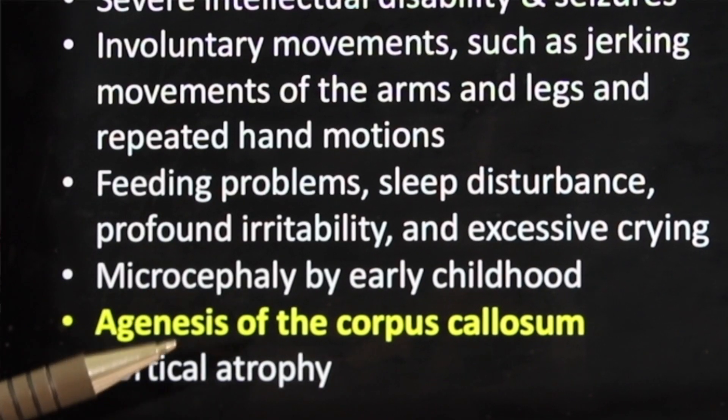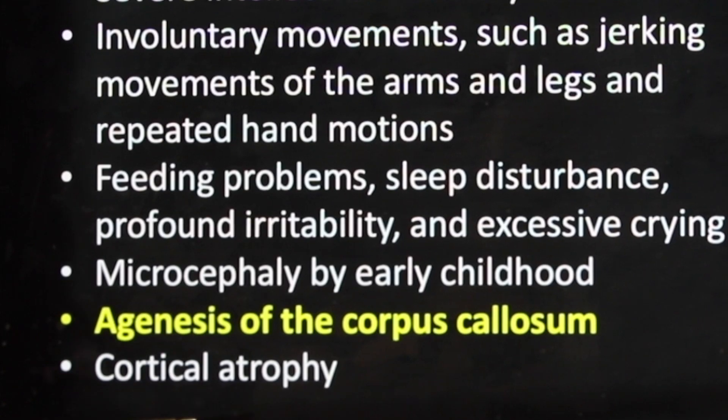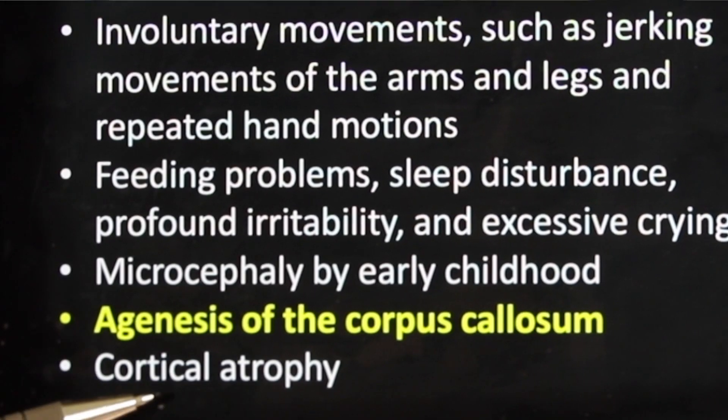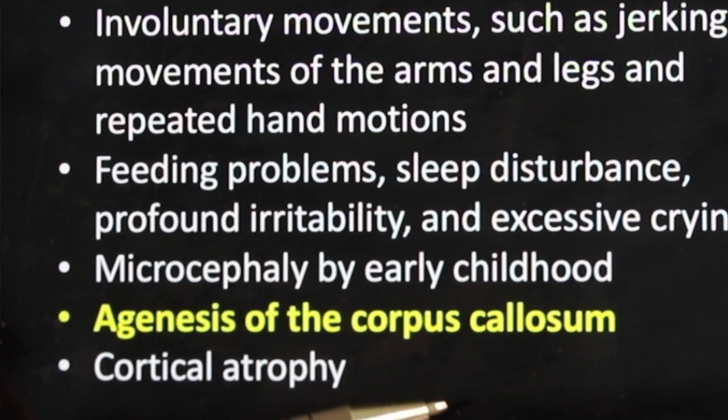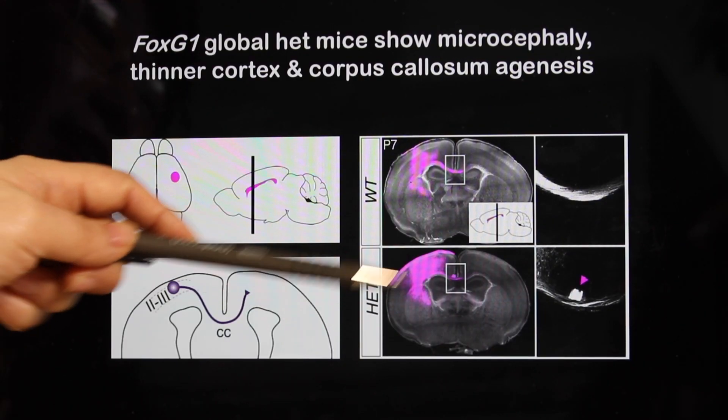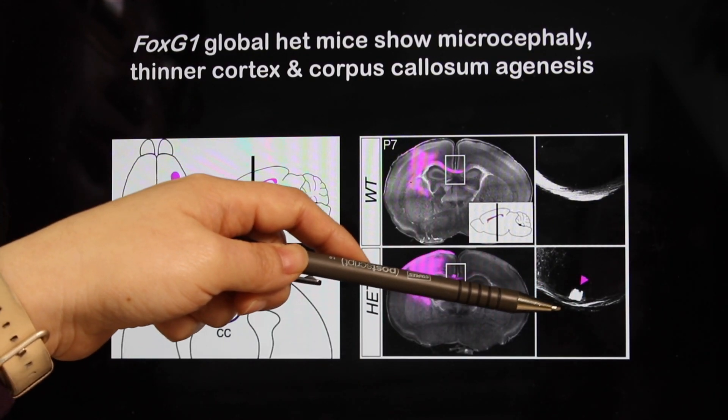One of the major signatures of their brain is the loss of the corpus callosum, which is the bridge that connects the right side and left side of the brain. This bridge is very thin or lost in FOXG1 syndrome kids. We first asked whether we can use mouse as a model system to study this, and we looked at mice that lost only one copy of FOXG1 — global heterozygote mice. Sure enough, mice, just like humans, show the loss of that bridge.